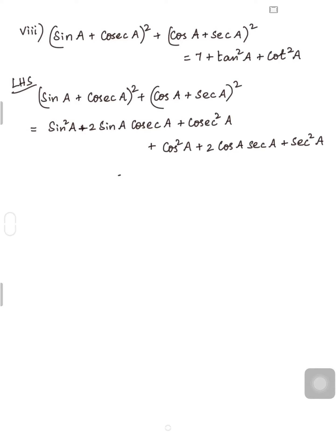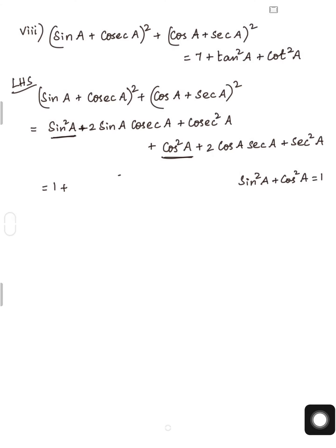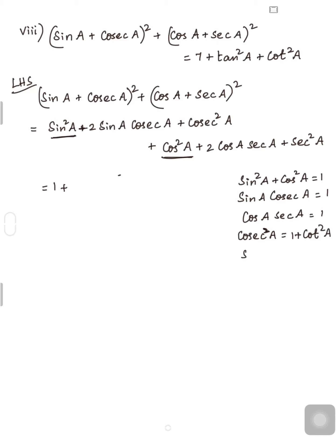We want the answer in the form of 7 + tan²A + cot²A. The identities we will use are: sin²A + cos²A = 1; sinA and cosecA are reciprocals of each other, so their product is 1; similarly cosA and secA are reciprocals, product is 1; cosec²A = 1 + cot²A; and sec²A = 1 + tan²A. We are going to use all these identities in this problem.